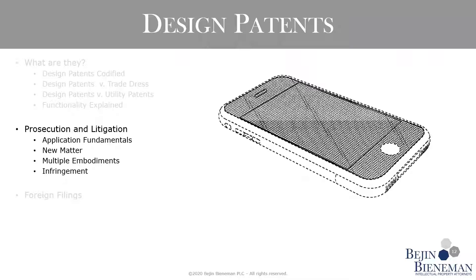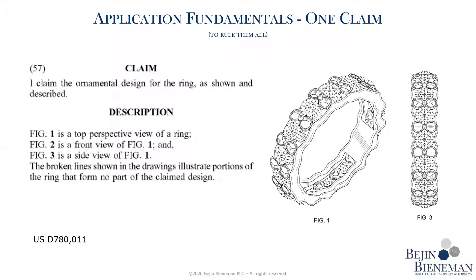Moving on, we'll talk a little bit now about preparing, prosecuting, and litigating design patents. Touching on some fundamentals of applications — things you'll run into in filing amendments or continuation applications — and then the infringement discussion, which will cover the Ordinary Observer Test. This slide shows a design patent for a ring. As far as the text goes, this is pretty much the entirety of it. Anyone familiar with utility patents will appreciate how brief and simple this patent is by comparison. One thing to note in particular is that there is only one claim.